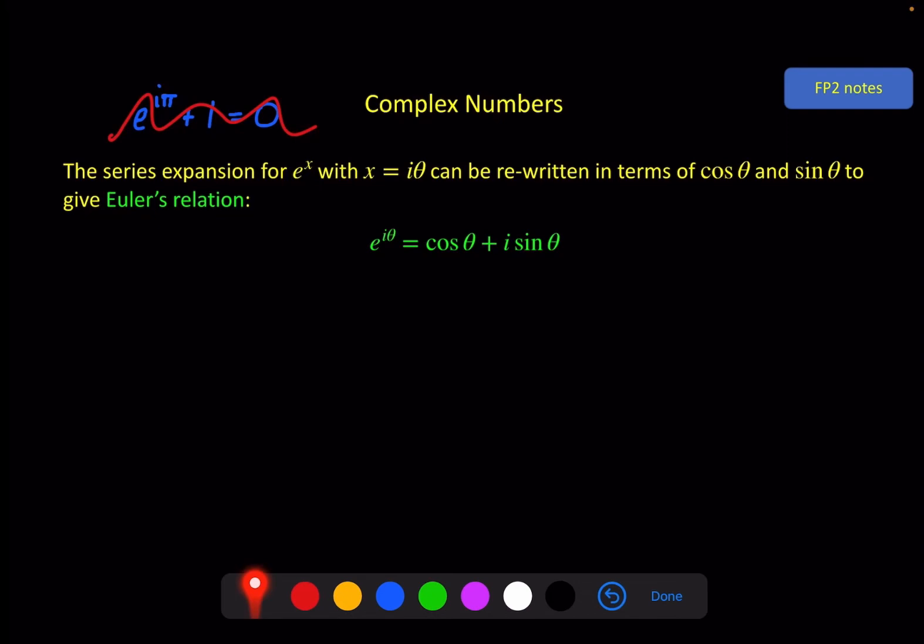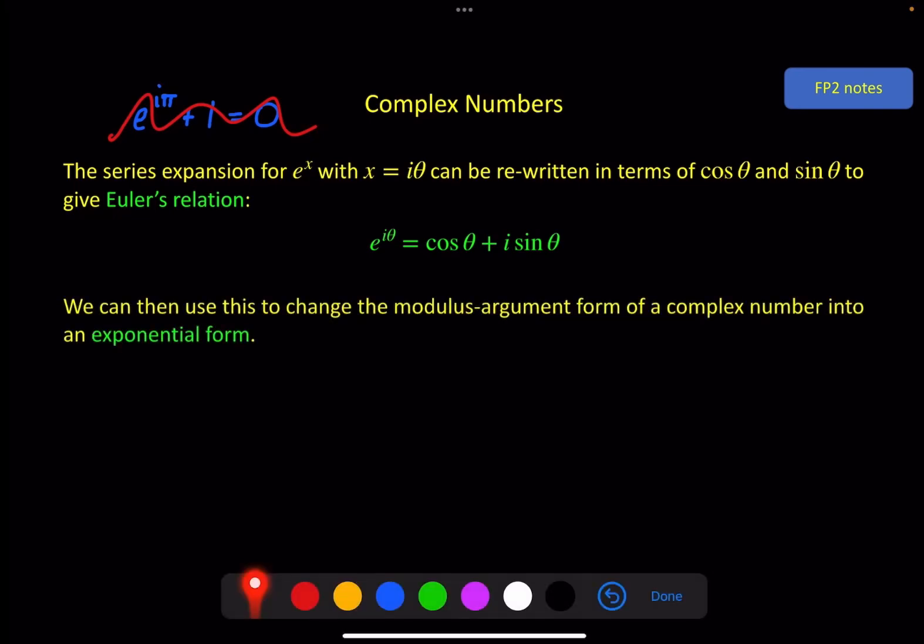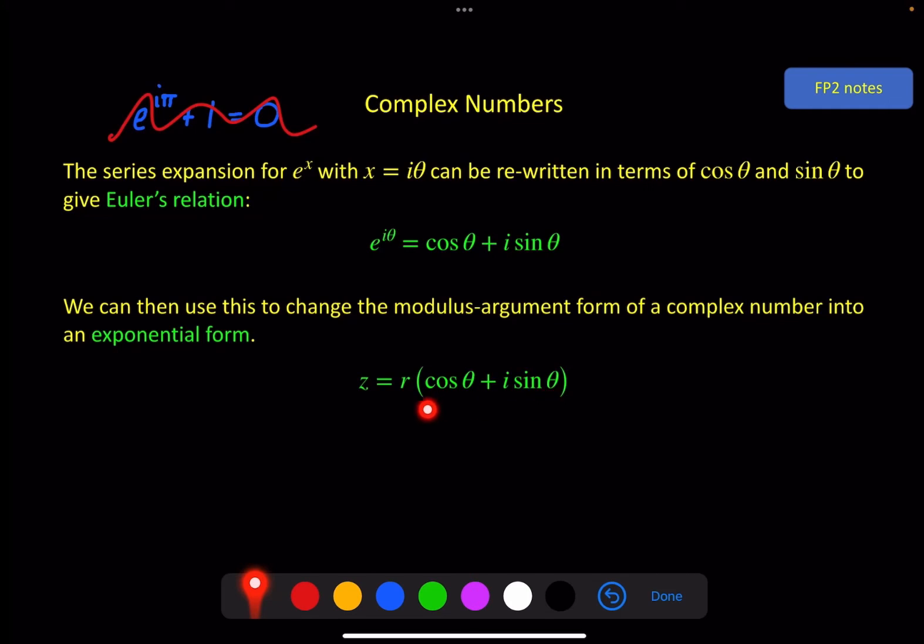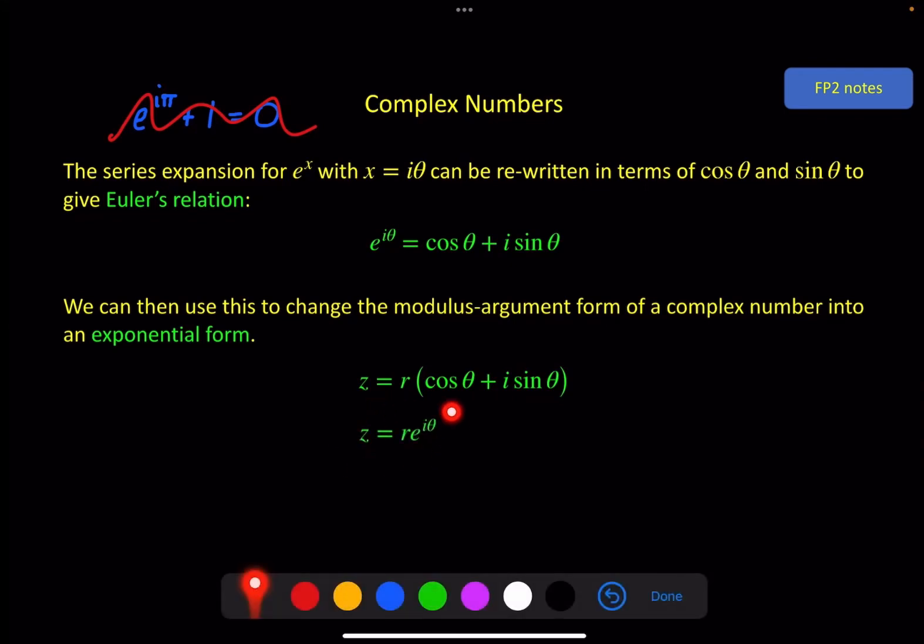What you do need to know is how this connects with exponential form and it connects through the modulus argument form of a complex number. This bit you should recognize as the bracket in the modulus argument form and we just replace that bracket with e to the iθ. So we get this as our exponential form of a complex number where r is still the modulus.